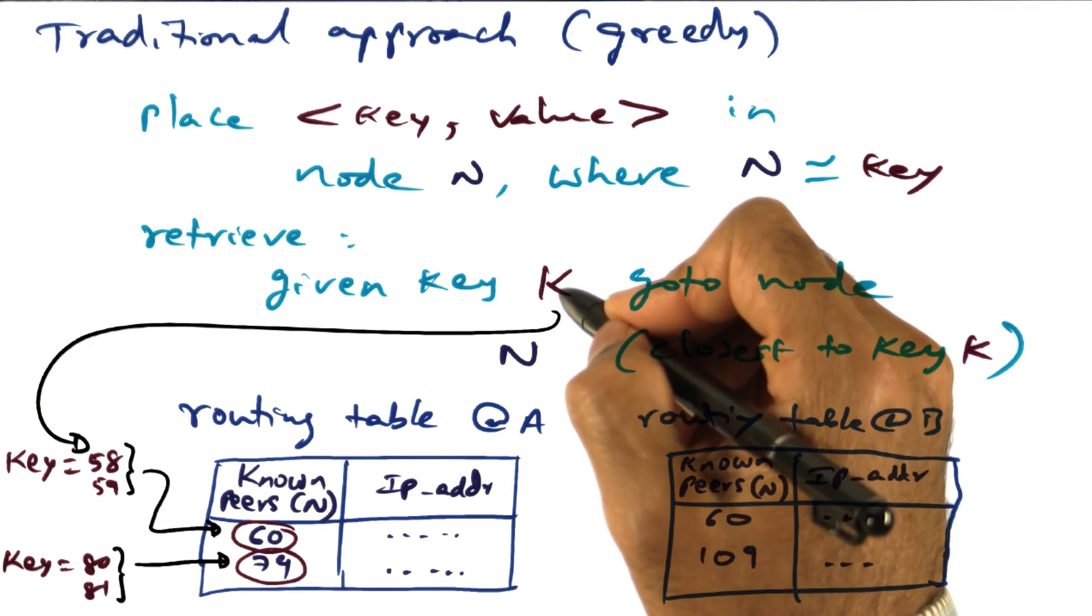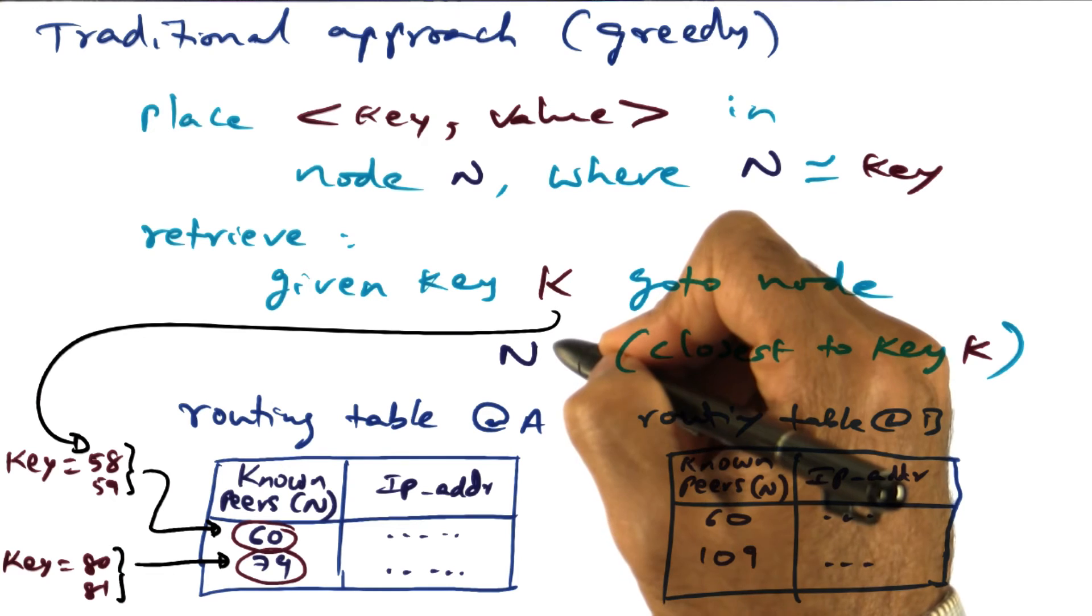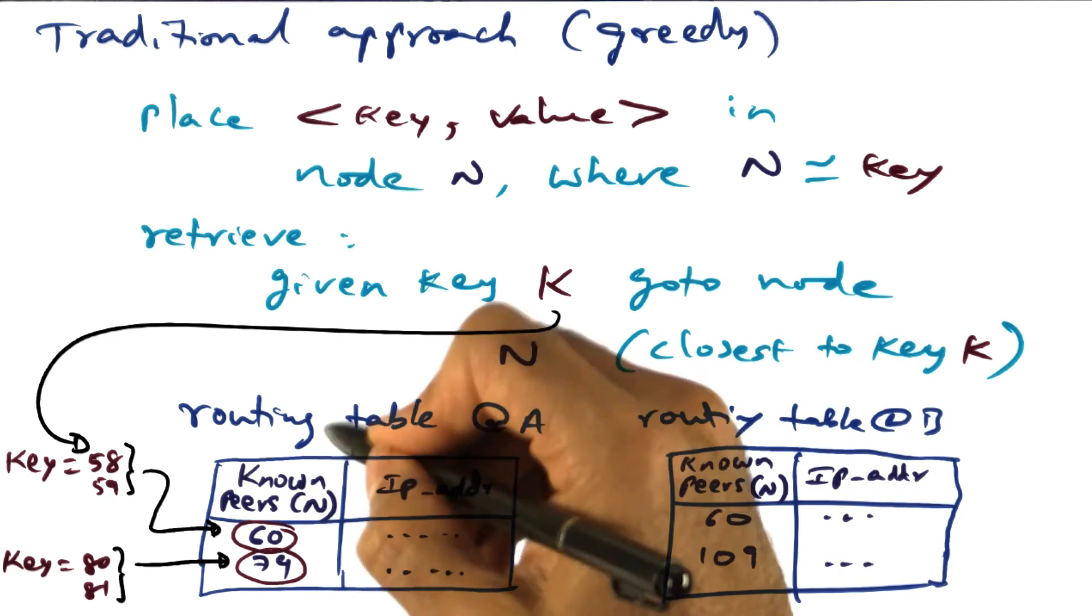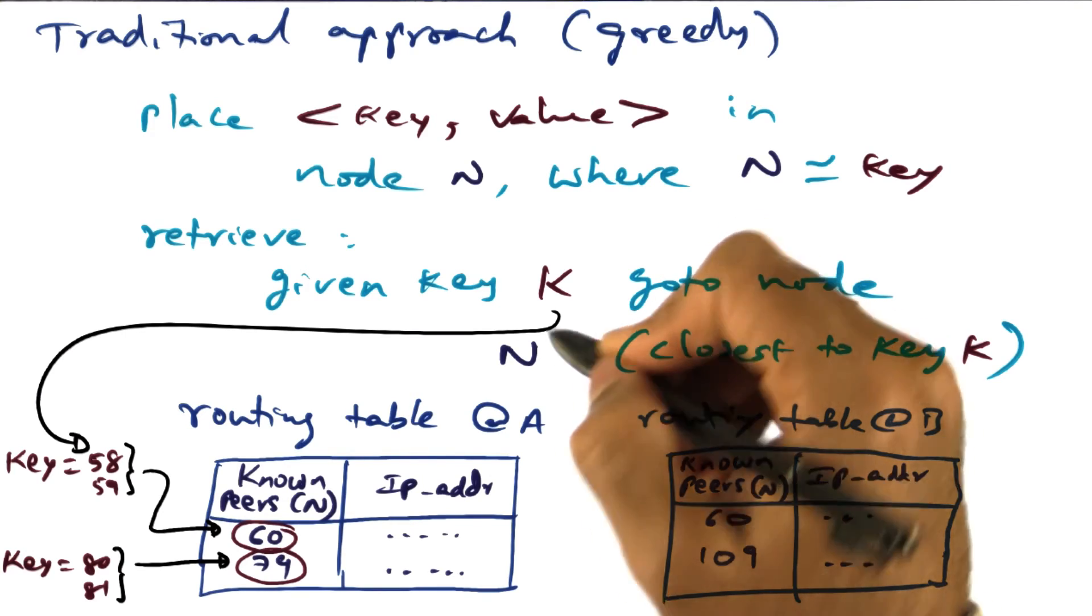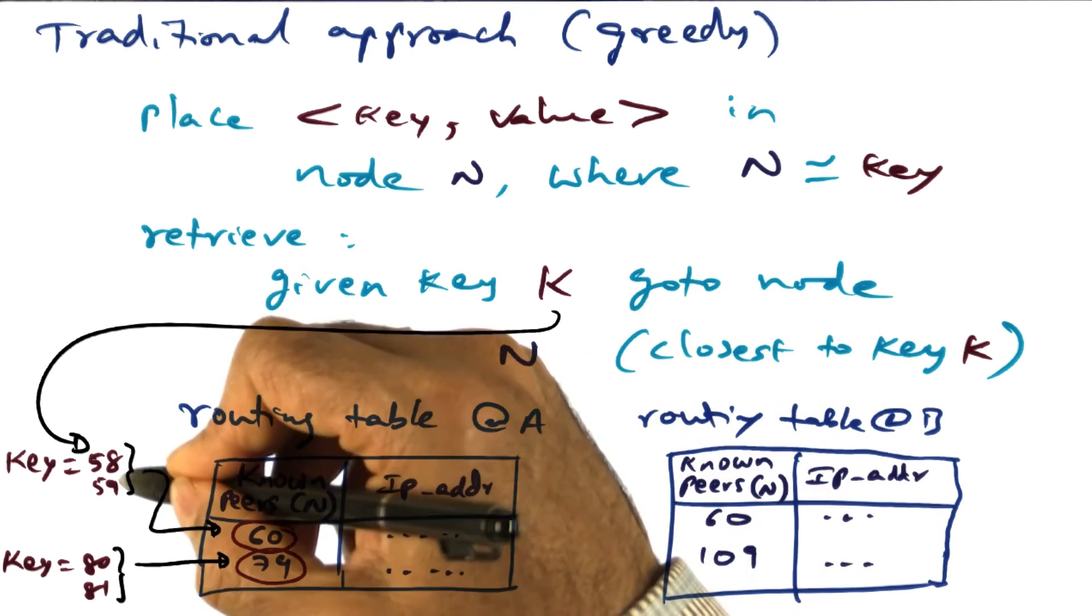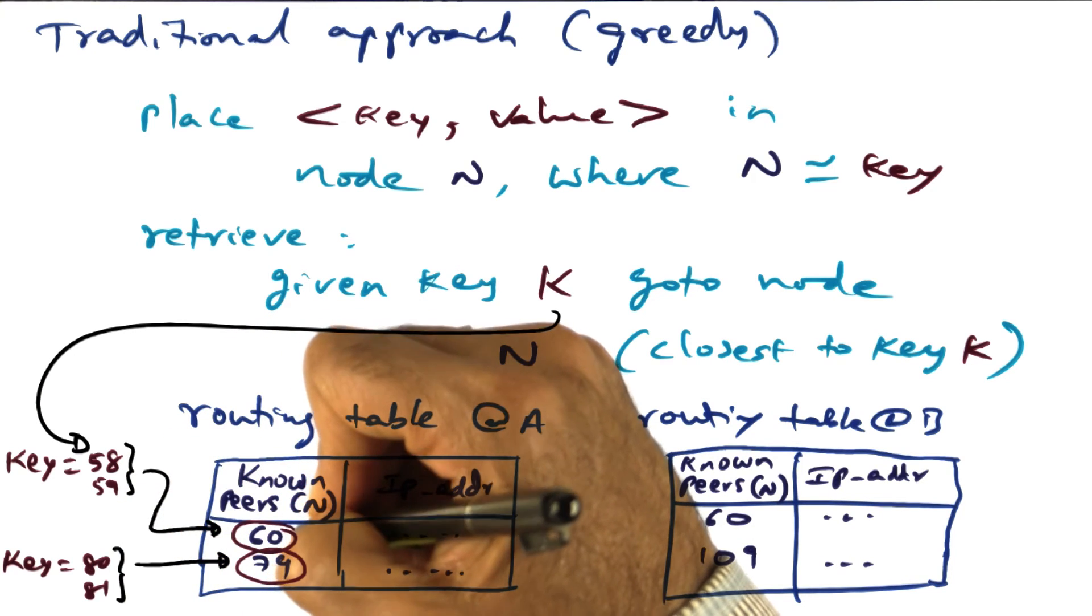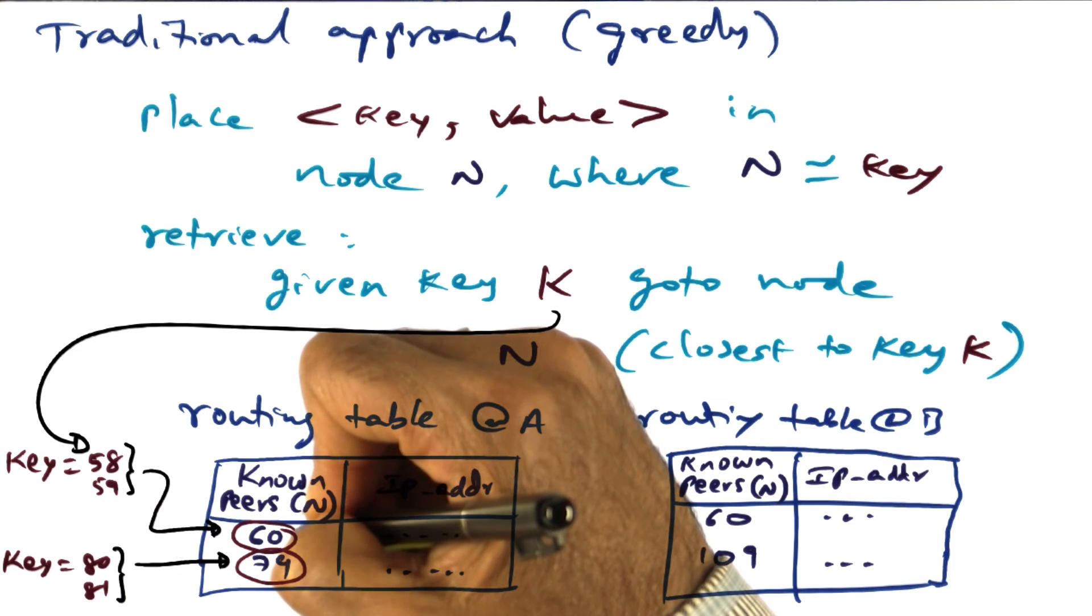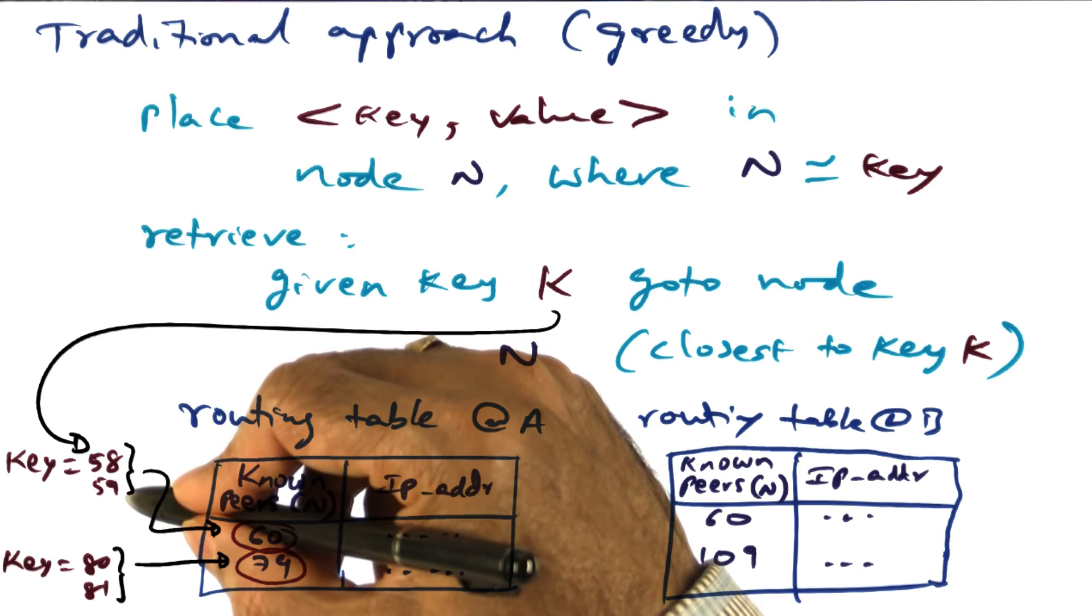Similarly, if I want to retrieve a key k, I'm going to go to a node n, where n is either equal to k, if I know how to get to it from my routing table, or get to a node that is close enough to the desired n. In this case, the desired n is 58 or 59, but the one that I can get to is 60. And my hope is that when I get to 60, he will know how to get me to node number 58 or 59.